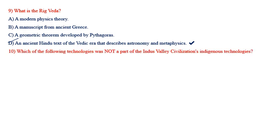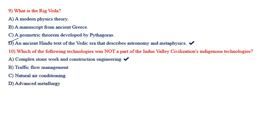Which of the following technologies was not a part of the Indus Valley civilization's indigenous technologies? Options: complex stonework on construction engineering, traffic flow management, natural air conditioning, advanced metallurgy. The answer is complex stonework on construction engineering — it is not part of the Indus Valley civilization.